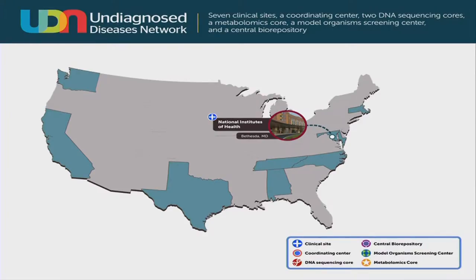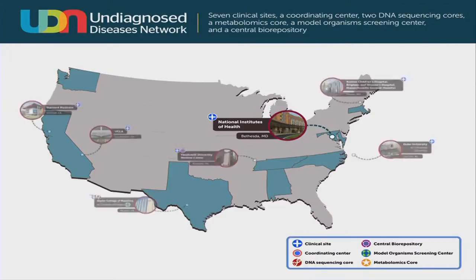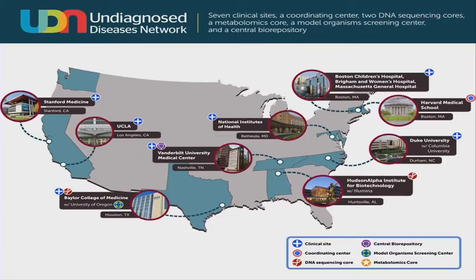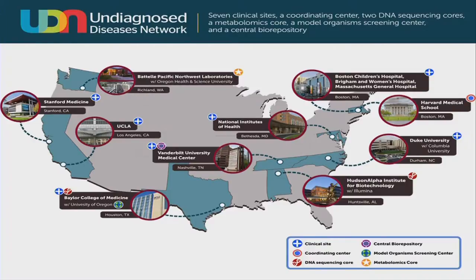The Undiagnosed Diseases Network grew from the Undiagnosed Diseases Program at the NIH Clinical Center. We now have seven clinical sites located at Stanford, UCLA, Baylor College of Medicine, Vanderbilt, the NIH, Duke, and Harvard. We also have a coordinating center at Harvard, two sequencing cores at Baylor College of Medicine and Hudson Alpha with a partnership with Illumina, a model organism screening center at Baylor College of Medicine with the University of Oregon, a metabolomics core at Battelle Pacific Northwest Laboratories with Oregon Health and Sciences University, and a central biorepository at Vanderbilt University. These make up the 13 sites that are part of our new Undiagnosed Diseases Network.